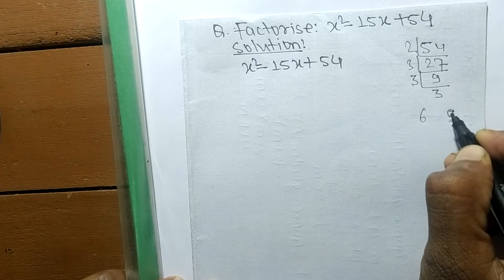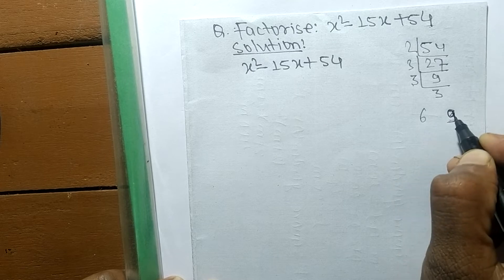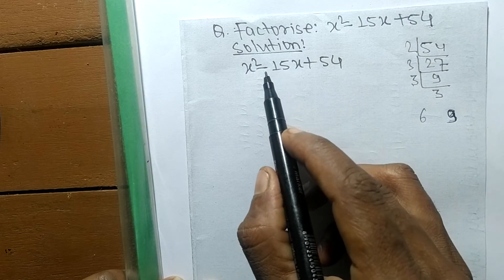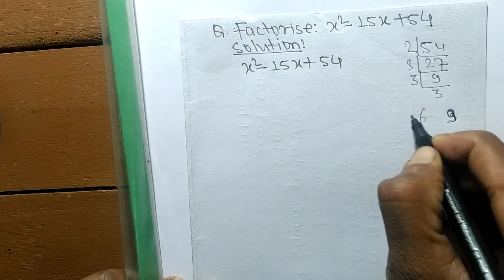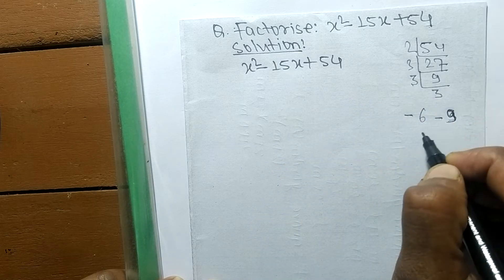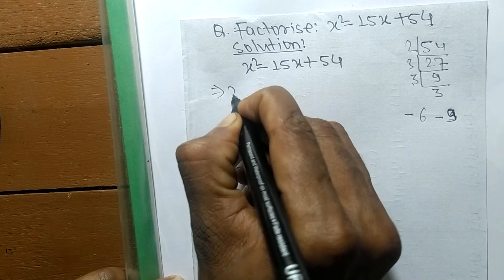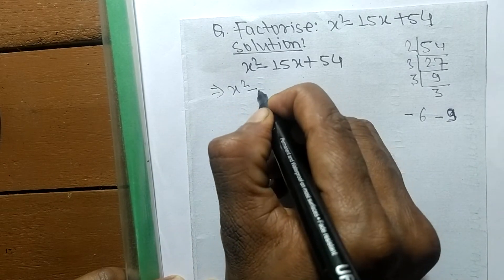So 6 plus 9 equals 15, but we need minus 15. So minus 6 and minus 9 equals minus 15. So we can write it x² - 6x - 9x + 54.